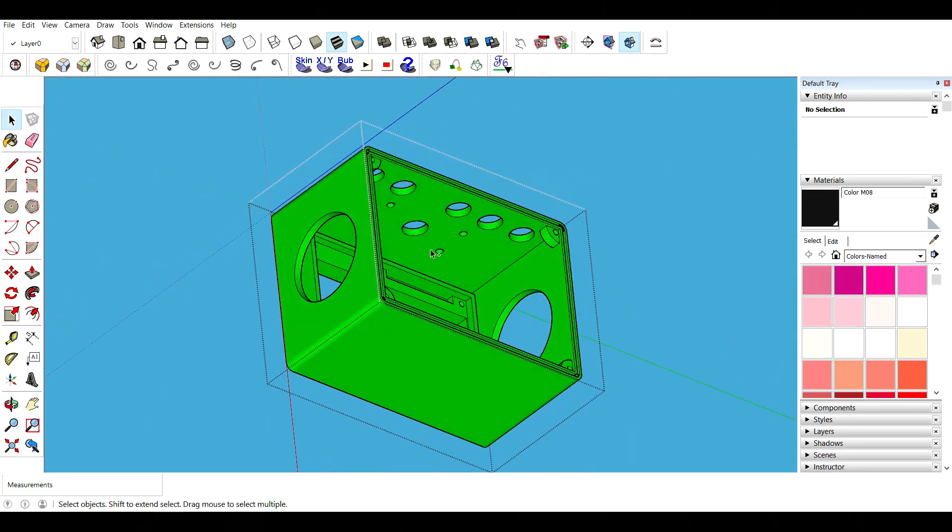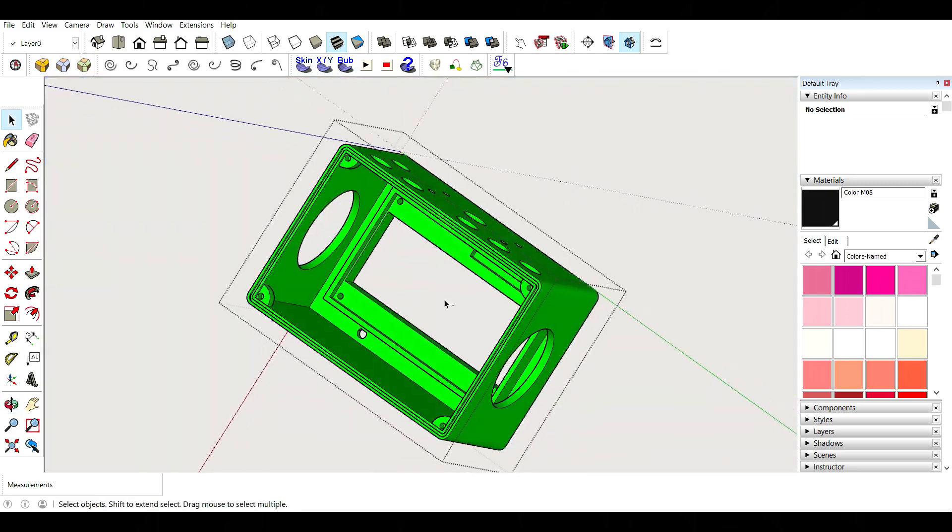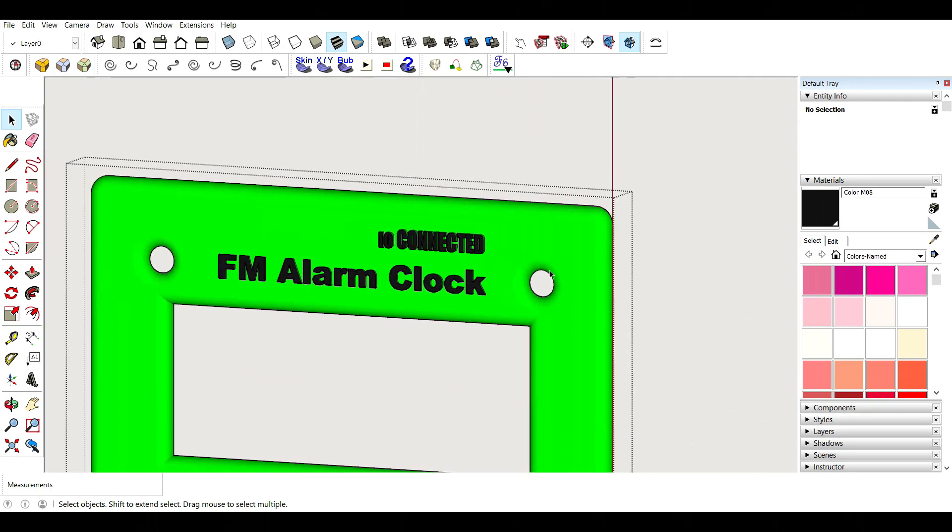And since I'm printing it from this side up, this is how it's going to be sitting on the printer's bed. So I made another part, this one here, and it's going to be glued on the front of the case to give a clean look.